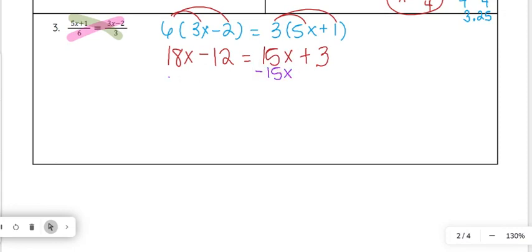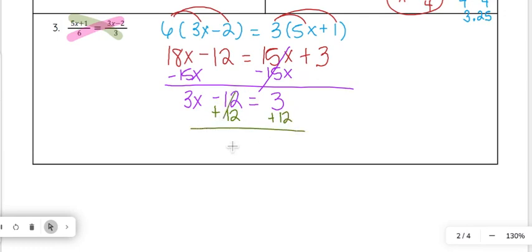At that point, we're going to subtract 15x. There are many ways, many routes you can go with this, but I like to go ahead and get the variables together by themselves on one side by moving the variables together first. So 18x minus 15x is 3x, then I still have minus 12 equals 3. And then I would go ahead and add 12 to both sides, and that would give me 3x equals 15. And then at that point, we're going to go ahead and divide both sides by 3 to get x by itself. And so we get x equals 5 as our answer here.